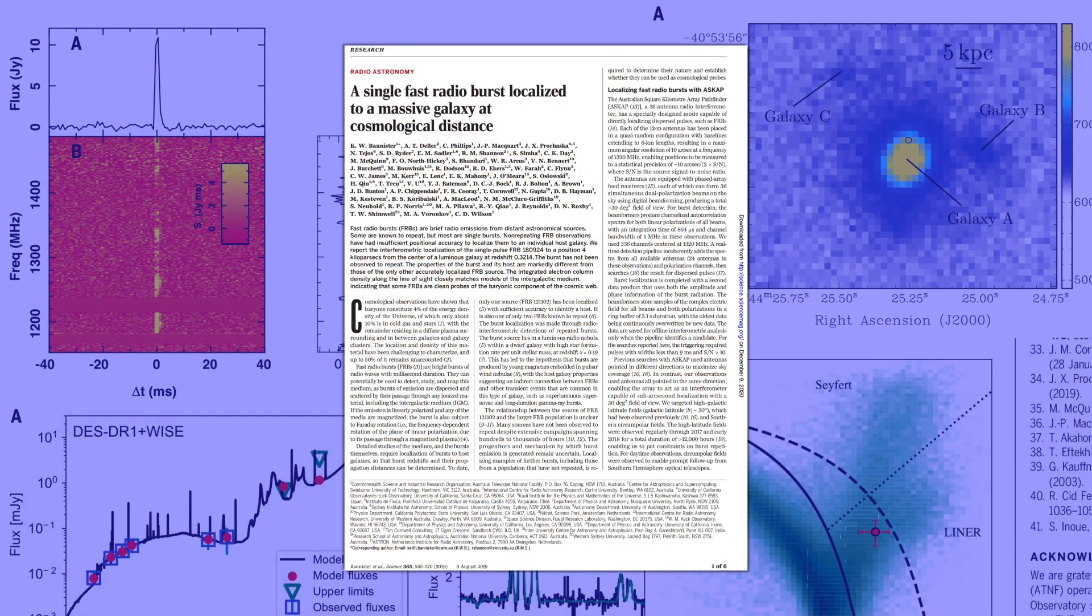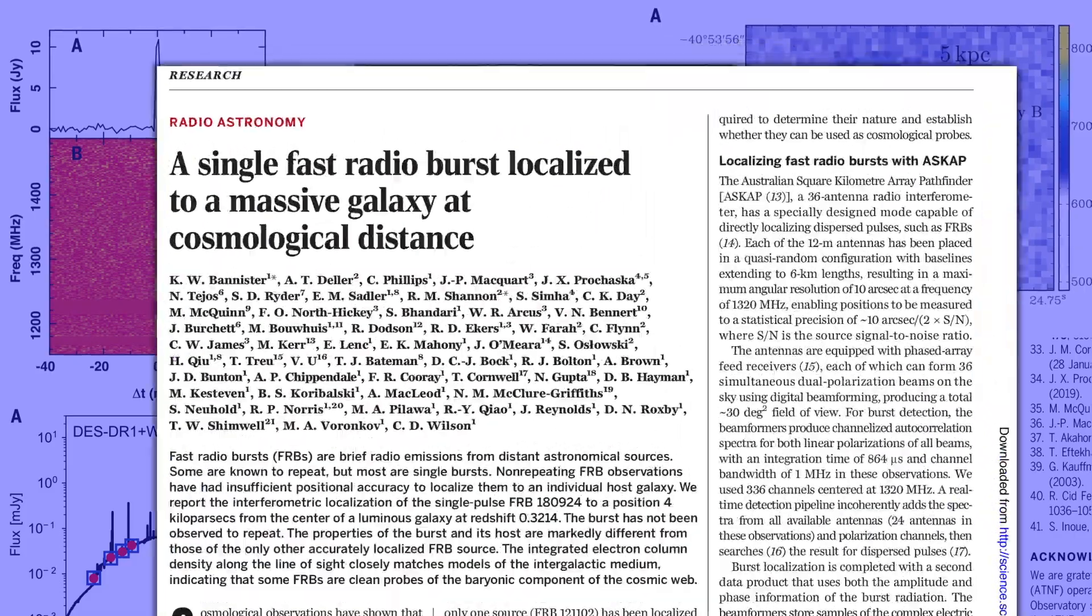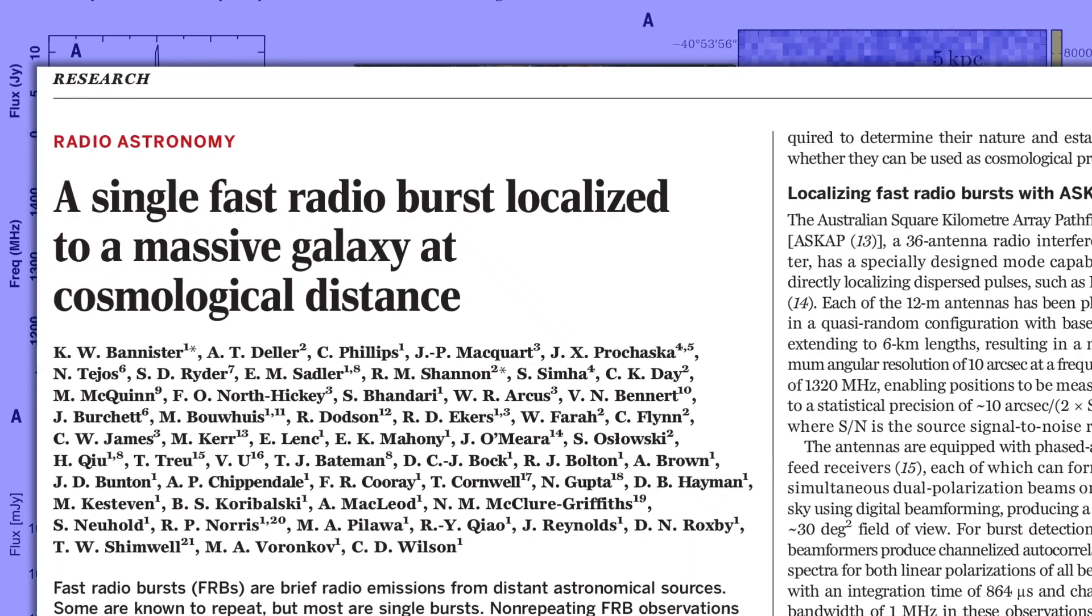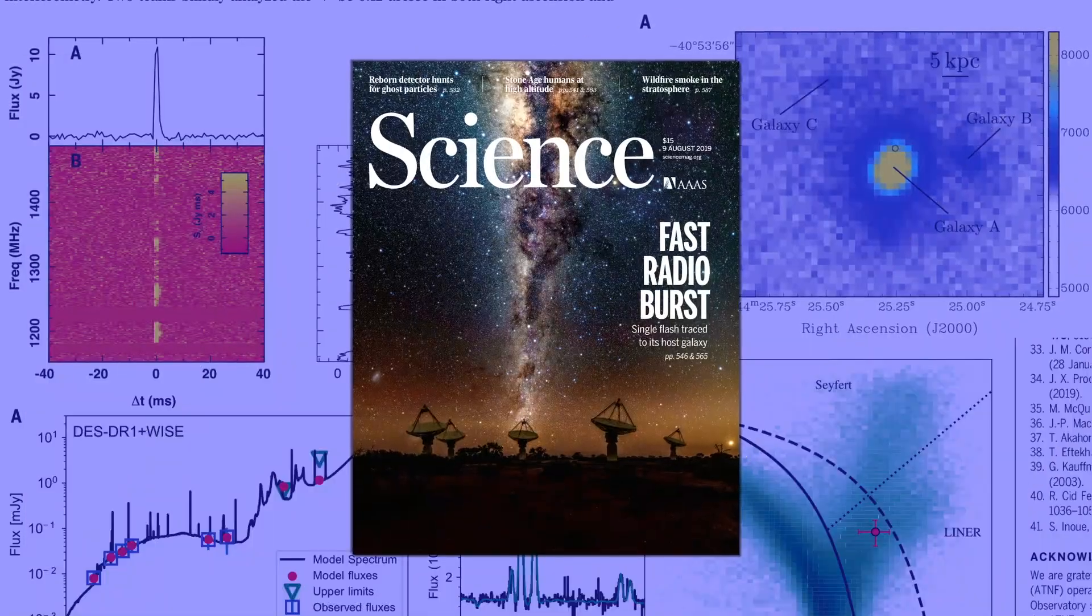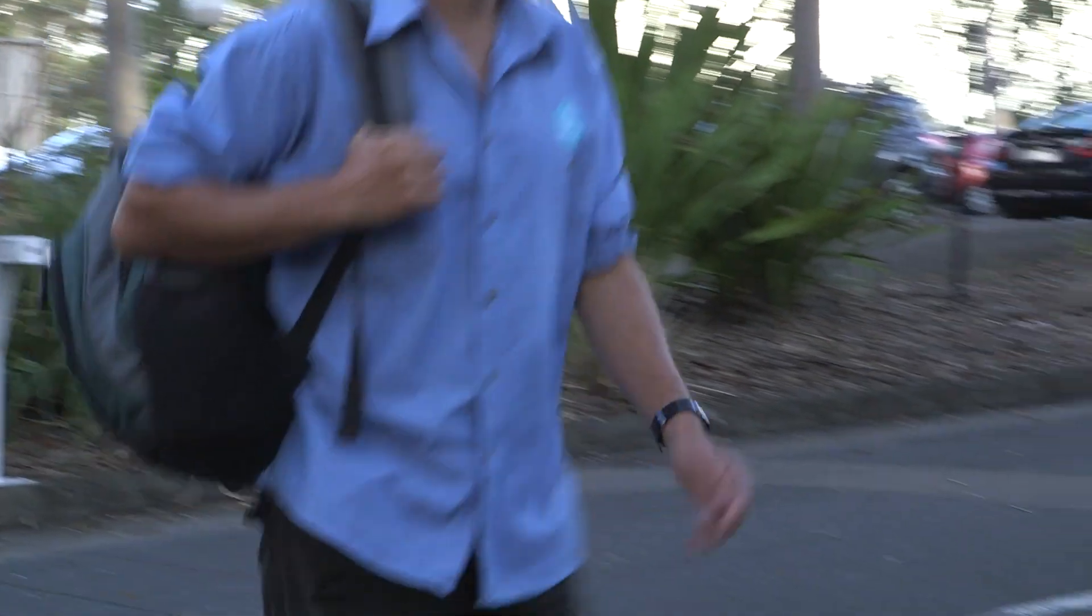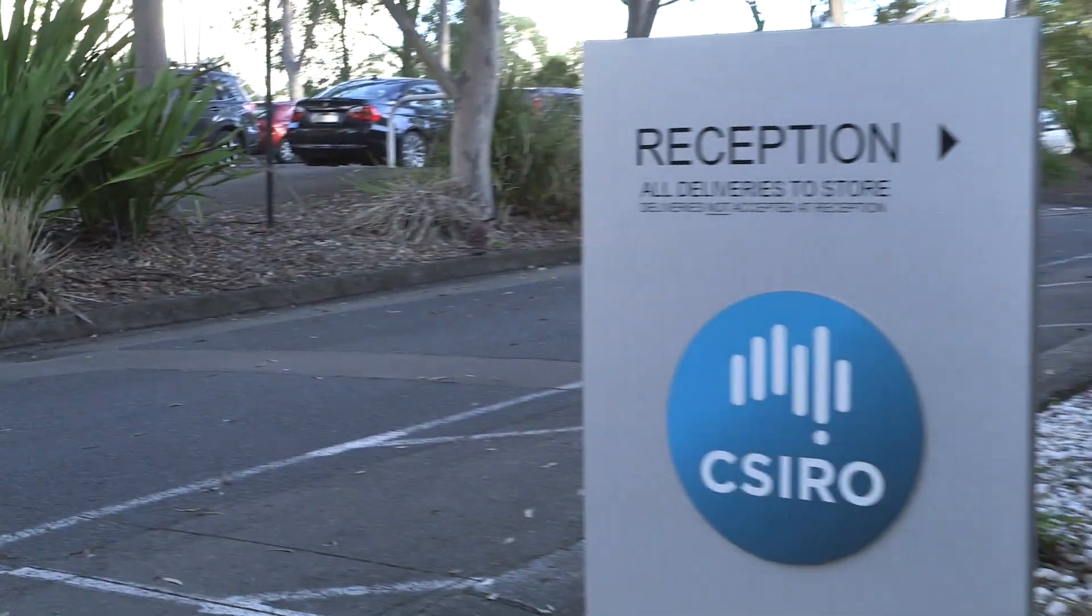This year, we present the prize to the research paper entitled A Single Fast Radio Burst Localized to a Massive Galaxy at Cosmological Distance, first published online in Science on June 27, 2019. The paper was the result of an international collaboration led by Keith Bannister of CSIRO, Australia's National Science Agency.